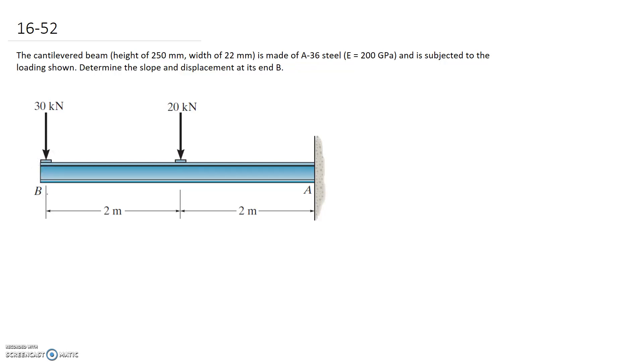Looking at this, the beam is pretty simple - it's just a cantilever and the loading that we've got is pretty simple as well. We've just got two point loads. So we should be able to go to one of the tables and look up the general equations for deflection and slope for these cases.